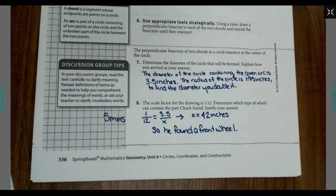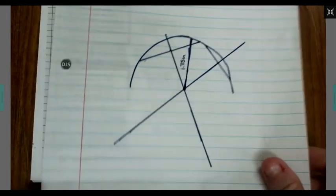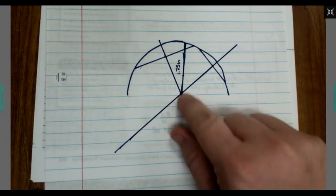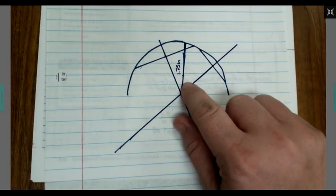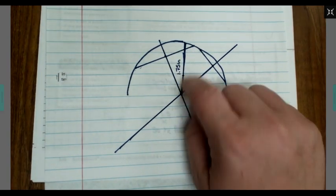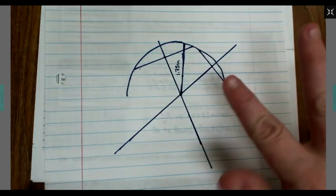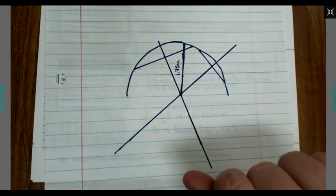The answers to questions seven and eight have been provided. What I did was I measured from the center of the circle to the outside edge, that was 1.75 inches. Well, that's just the radius, and if you double the radius, you get your diameter.